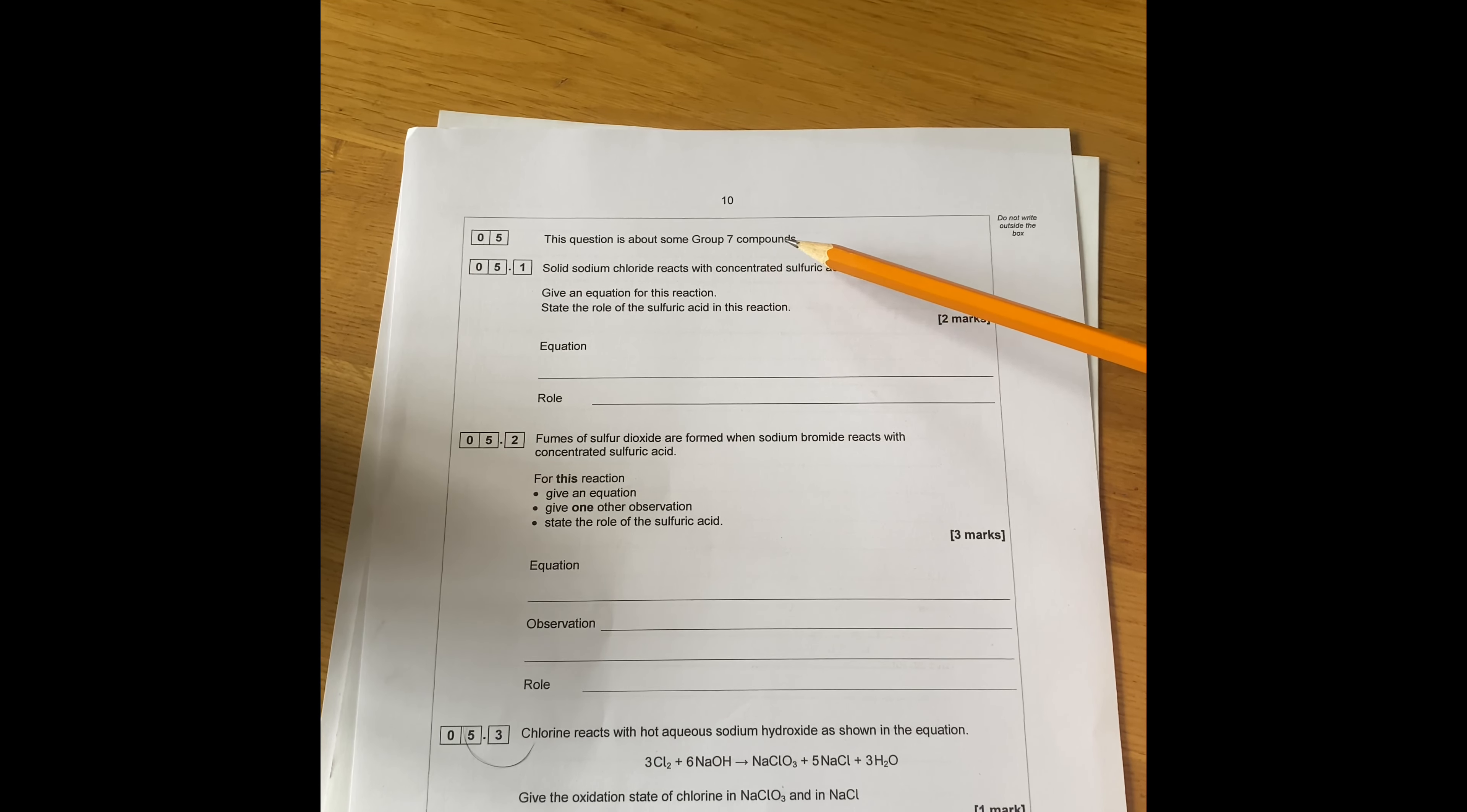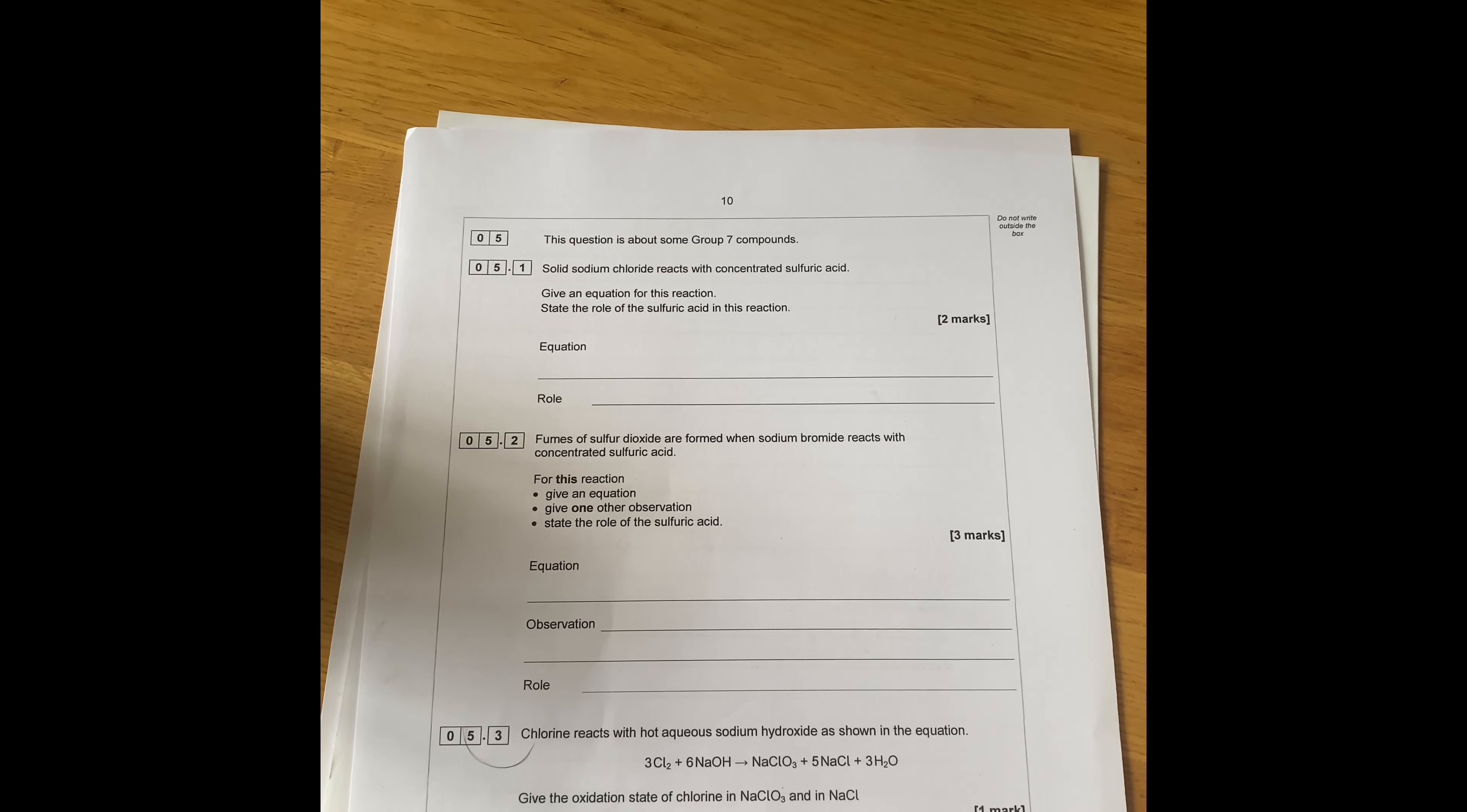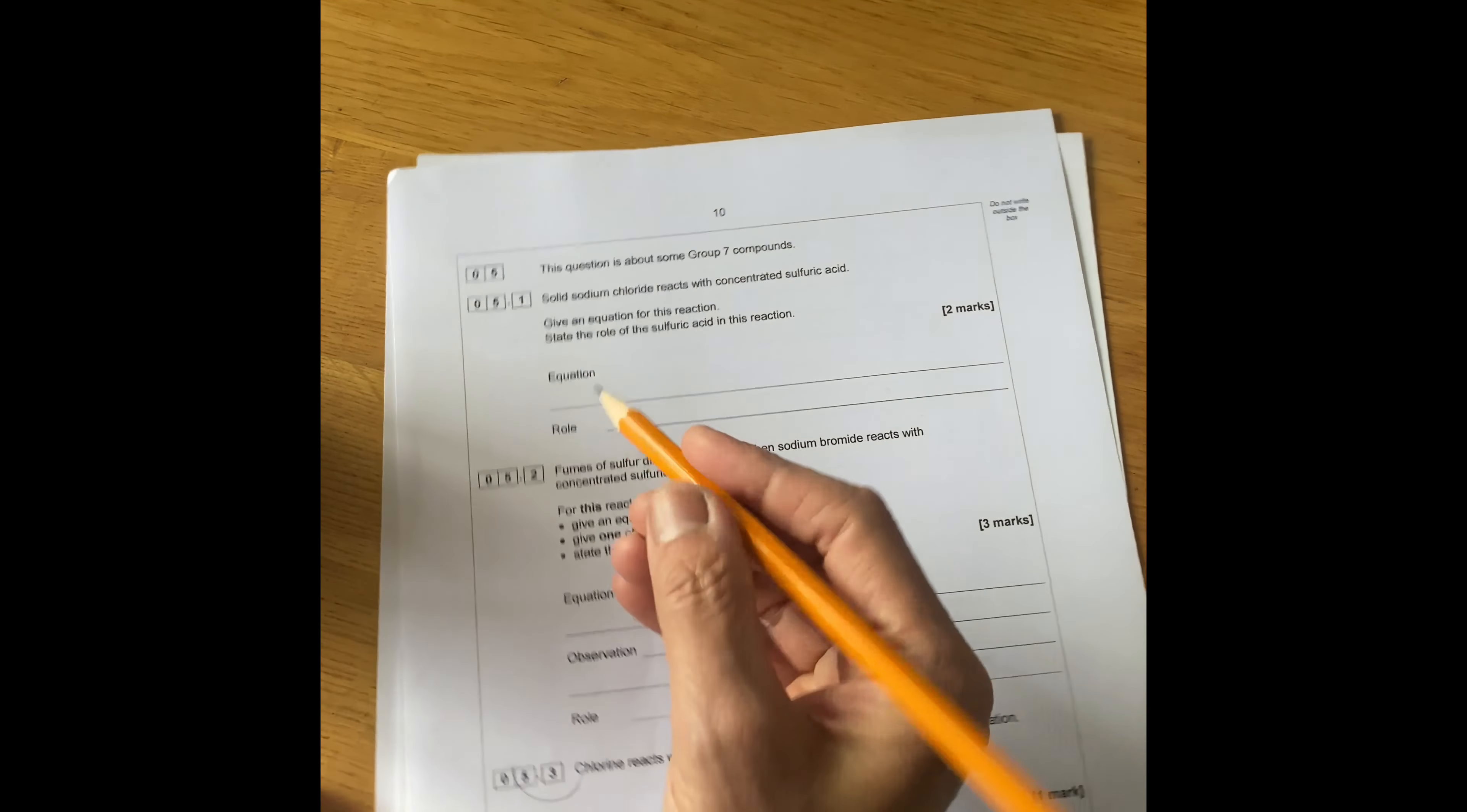Right, we're going to do a question from A-level now from 2019 paper again. The question is about some group seven compounds. Solid sodium chloride reacts with concentrated sulfuric acid. Given the equation for this reaction, state the role of sulfuric acid in this reaction.